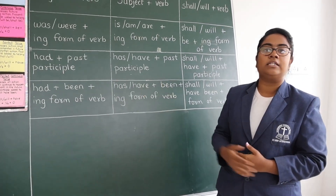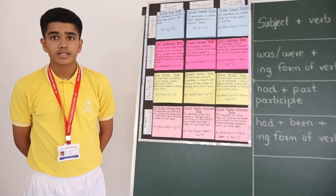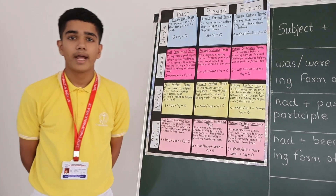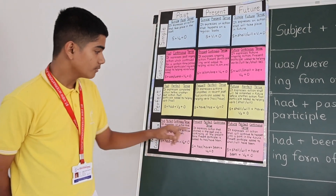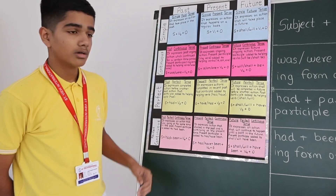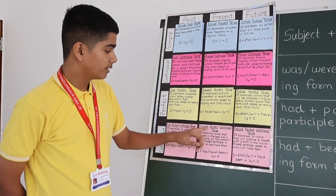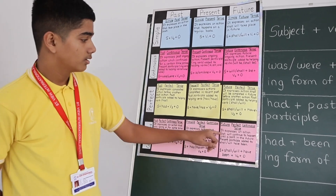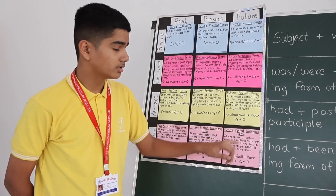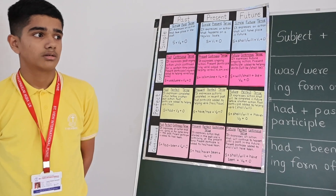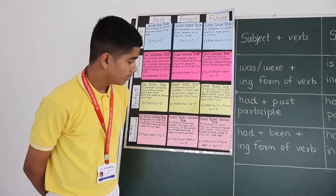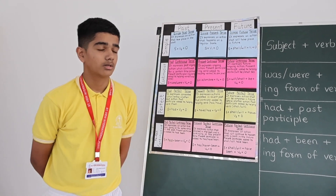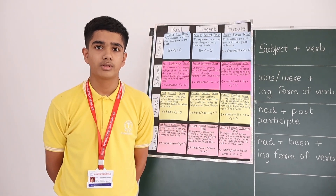Sharish, please come ahead and explain the other examples. The example for past perfect continuous tense is: I have been driving for three hours. The example for present perfect continuous tense is: they had been playing football. The example for future perfect continuous tense is: I have been waiting for three hours.